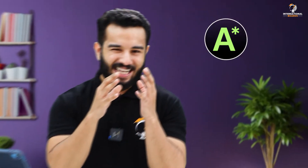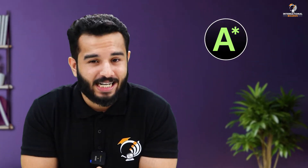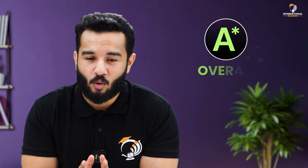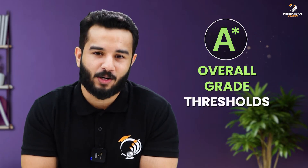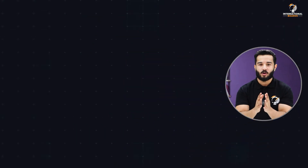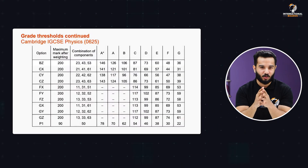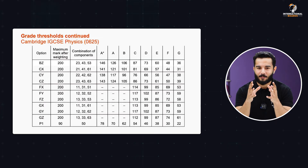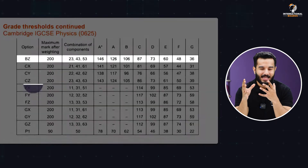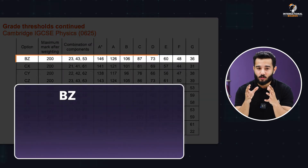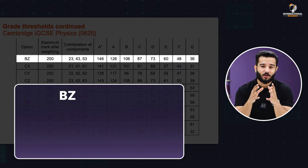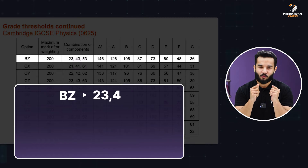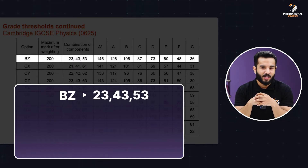Grade A-star is not awarded for individual components, but only for the overall score across multiple components. Let's take a look at the overall grade thresholds based on a combination of components. Take for example the BZ option — it includes the combination of components 2-3, 4-3, and 5-3.